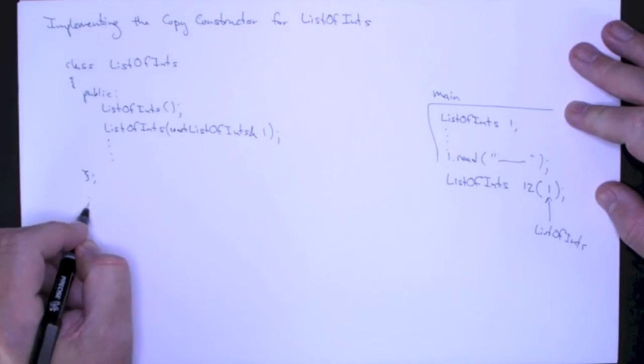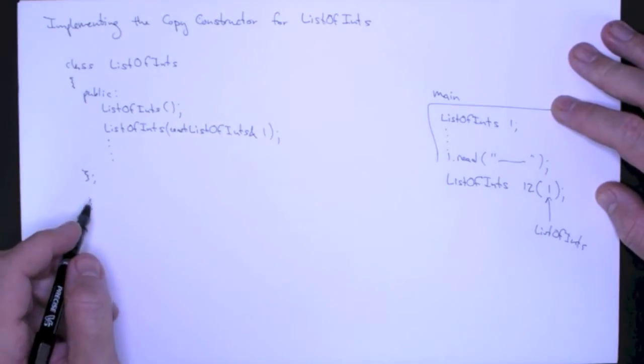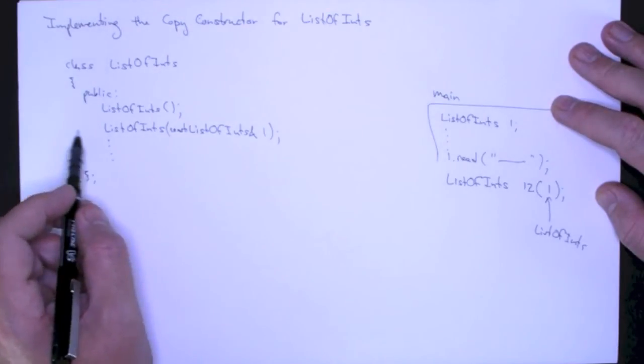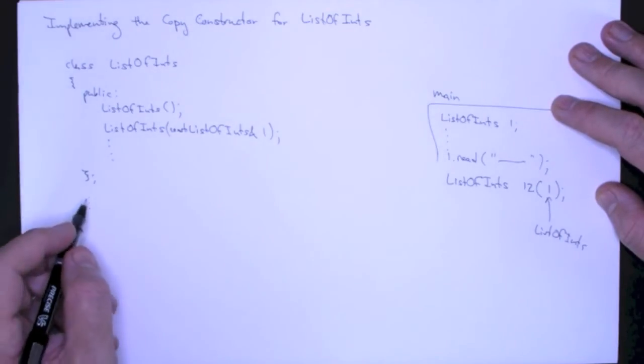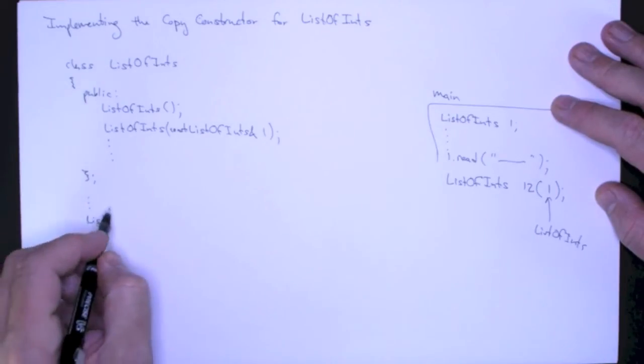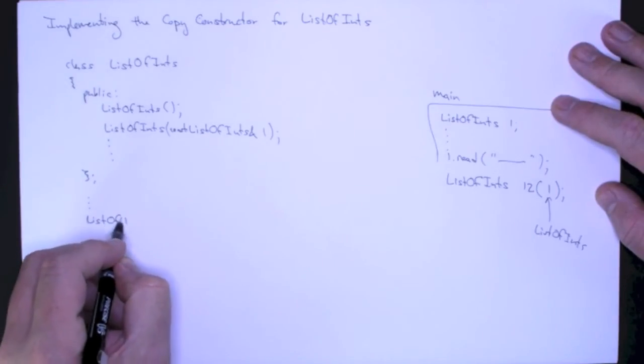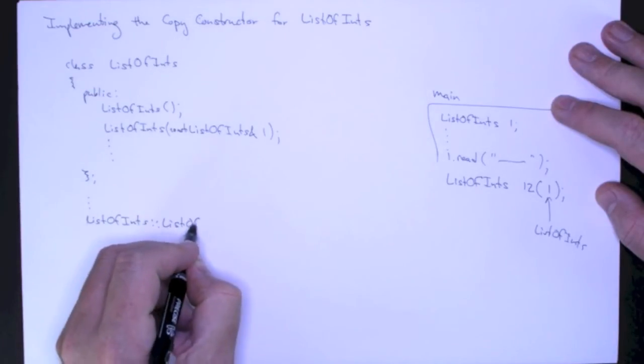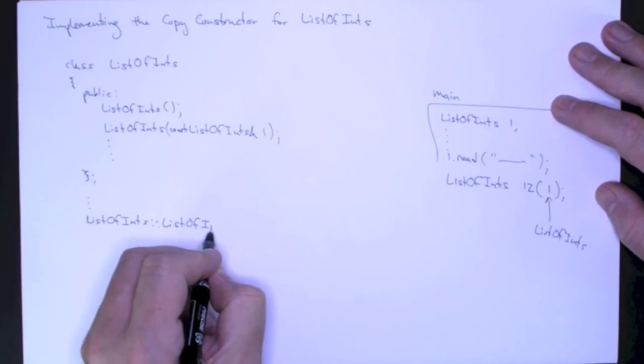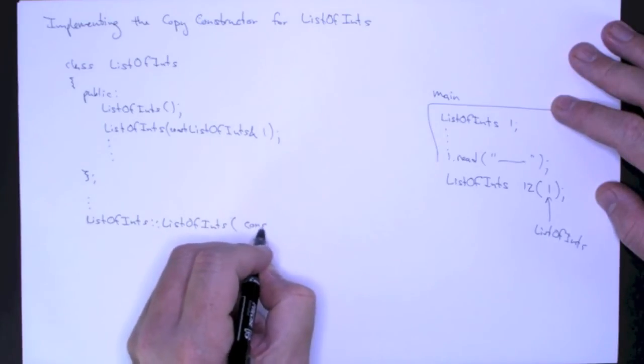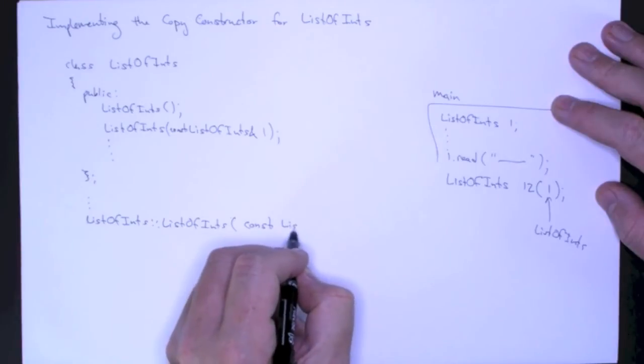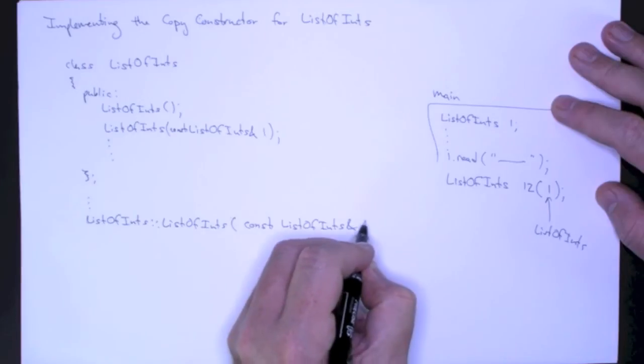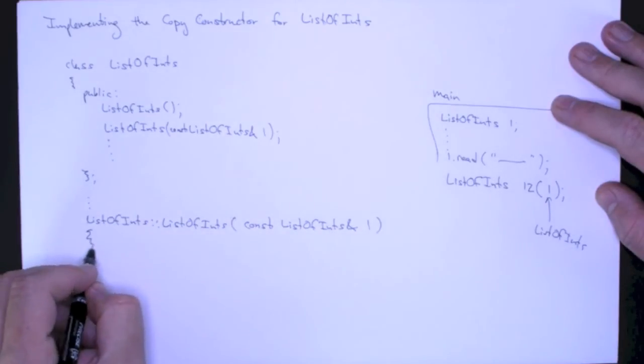Now in terms of the implementation, you take this and you replace the semicolon with a method body and you add the class name and the scoping operator to the beginning for your implementation. So here we have list of ints, colon colon, list of ints. Constant list of ints and l. And now I can implement this.